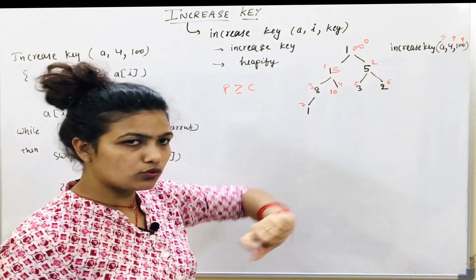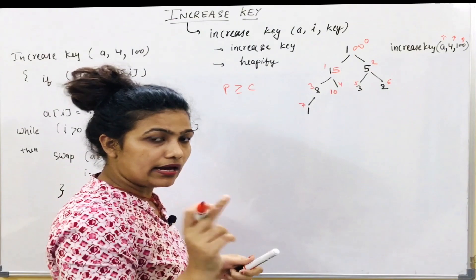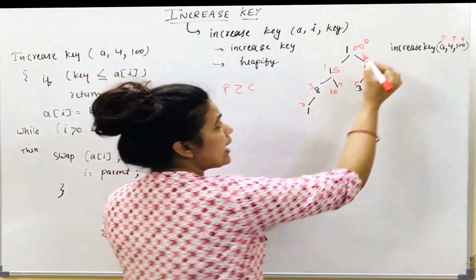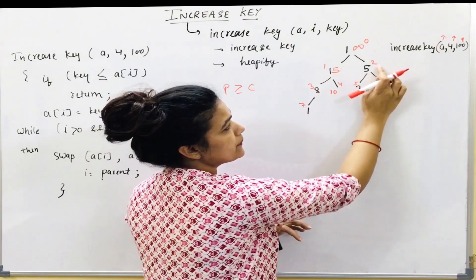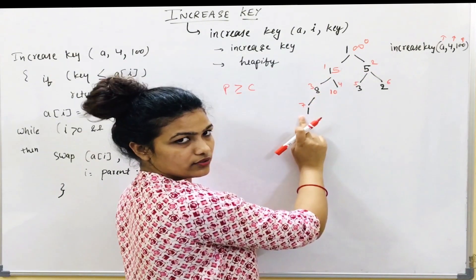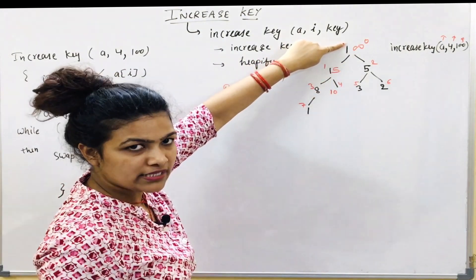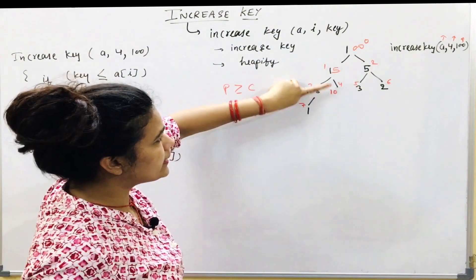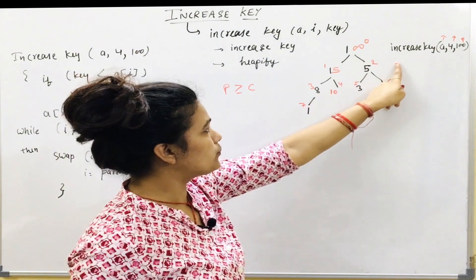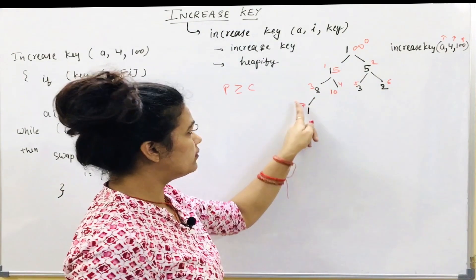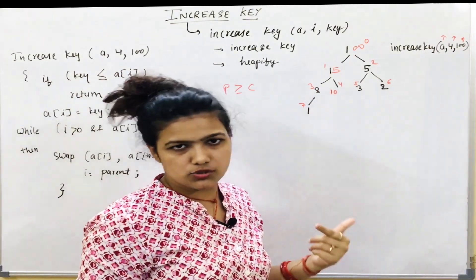We can verify: starting from 100, check 100 → 15 → 5: satisfied. Then 8, 10, 15: satisfied. Node 5 with child 3 and 2: satisfied. Node 8 with child 1: satisfied. Leaf nodes are by default max-heap. So this completes the increase key operation for the first example.